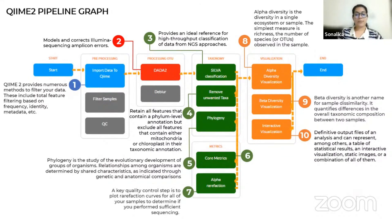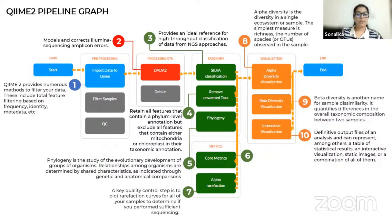QIIME2 plugins in the pipeline on the T-BioInfo server exist for the latest generation tools for sequence quality control from different sequencing platforms, DADA2 and Deblur, taxonomy assignment, and phylogenetic insertion, which quantitatively improves the result.